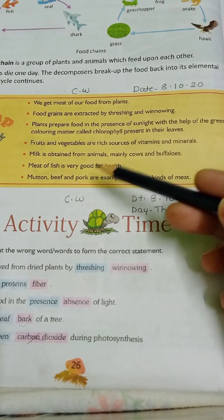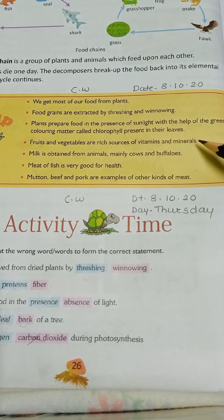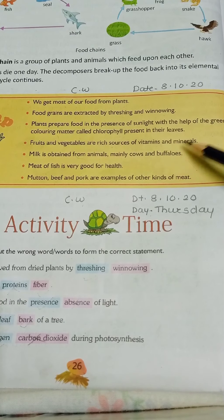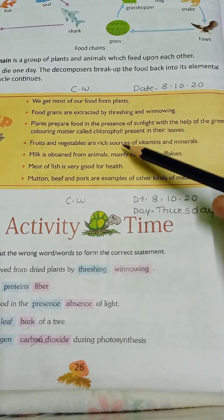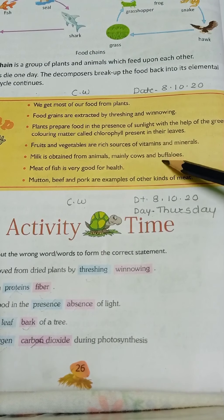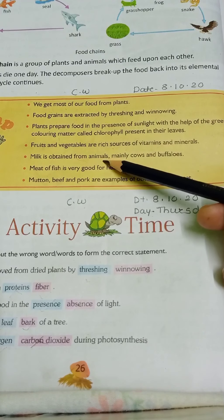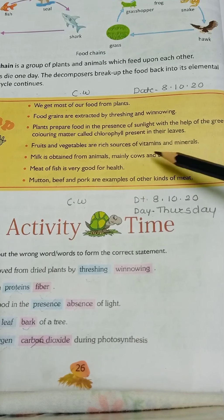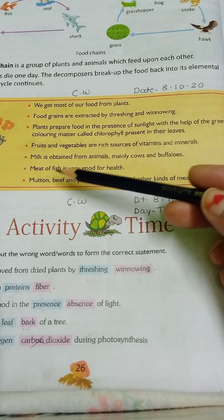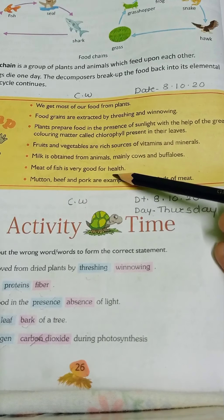Then next, fruits and vegetables are rich sources of vitamins and minerals. Milk is obtained from animals, mainly cows and buffalo. Milk is very good for health.